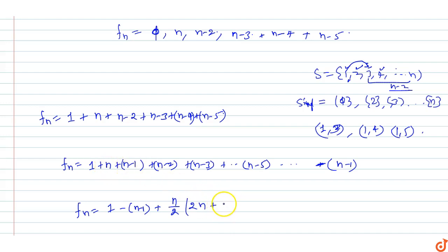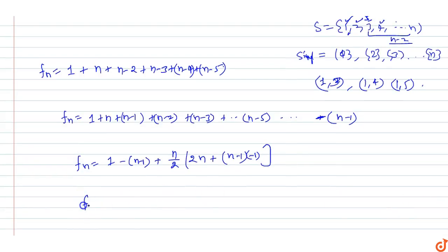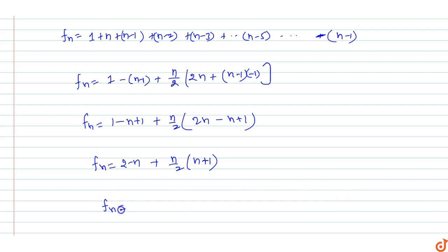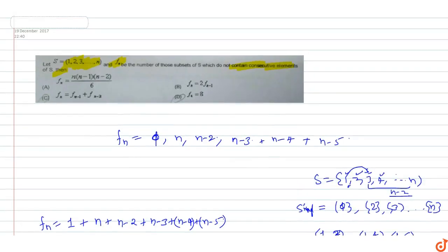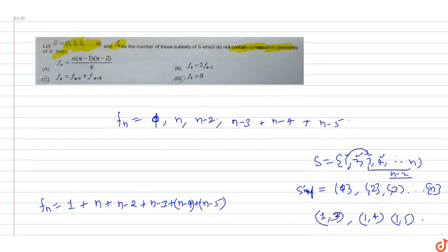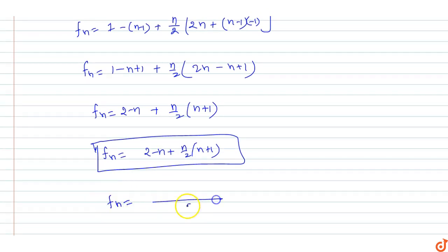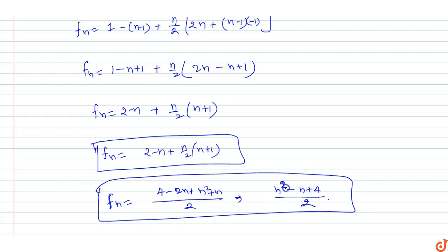The common difference is minus 1. So f(n) equals 1 plus (n/2) × (2n minus n plus 1), which simplifies to 2 minus n plus (n/2)(n plus 1). Further simplifying: f(n) = (4 minus 2n plus n² + n) / 2, which gives f(n) = (n² minus n plus 4) / 2.